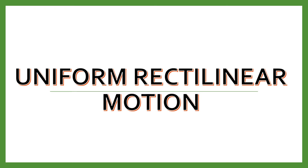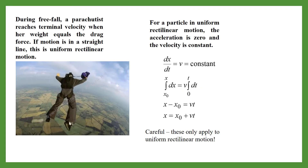Welcome, dear students. In this video I will discuss uniform rectilinear motion. Suppose a parachutist is freely falling from space — when her weight equals the drag force she reaches terminal velocity. If she falls in a straight line, the motion is uniform rectilinear motion, and for a particle in uniform rectilinear motion, acceleration is zero.